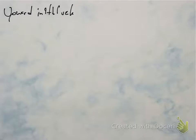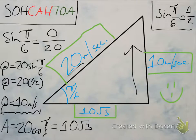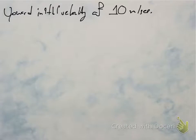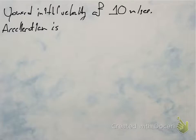Let's write down what we know. We have an upward initial velocity of 10 meters per second — this is our velocity in the upward direction. But acceleration is negative 10 meters per second squared. So we have these two pieces of information.